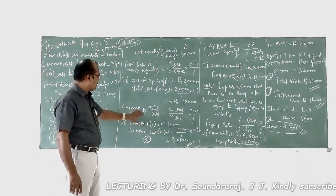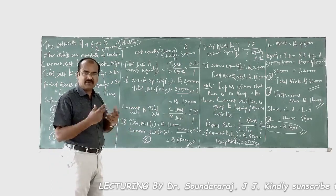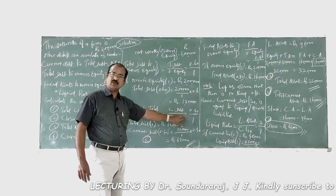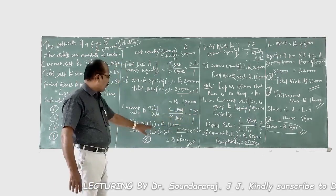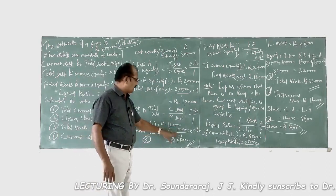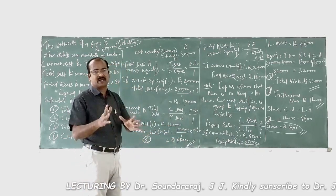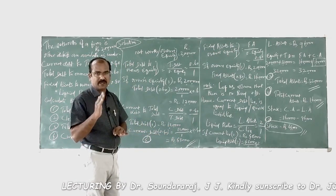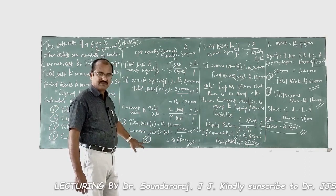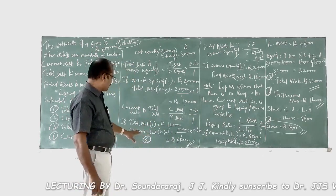Next, using current debt to total debt ratio. Current debt divided by total debt = 0.4 to 1. If total debt with weight 1 equals 1 lakh 20,000, then current debt with weight 0.4 equals 1 lakh 20,000 divided by 1, multiplied by 0.40, giving 48,000 rupees. This is the value of current debt — the answer to the fourth question.